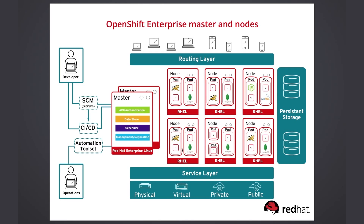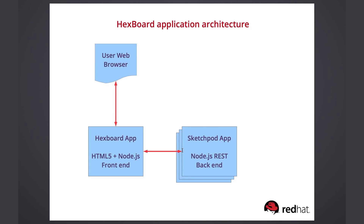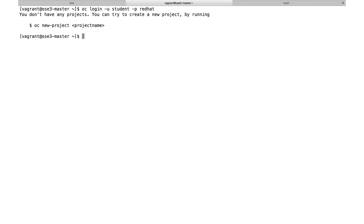It's time to see OpenShift Enterprise in action. In this demonstration, I will deploy a simple application that highlights the ease of scaling an application. The hex board application is composed of two parts: the front-end hex board and the back-end sketch pod. The web application graphs every running instance of the sketch pod application. I'm going to use the OC command line interface to build these two applications. First I need to log in as the user student with the password Red Hat. Since I don't have any projects, I need to first create one using OC new-project.